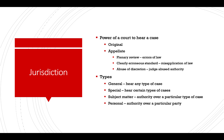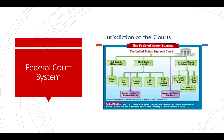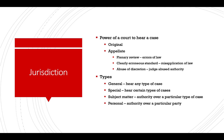Appellate courts can also appeal for misapplication of facts — that's a clearly erroneous standard. And they can appeal because the judge abused his or her authority — that's abuse of discretion. There are four different types of jurisdiction. General jurisdiction means a court can hear any type of case. Special jurisdiction means courts can only hear certain types of cases — for example, the U.S. Tax Court can only hear tax cases, and military courts only hear cases involving military claims. The 94 district courts have general jurisdiction. There's also subject matter jurisdiction — authority over a particular type of case — and personal jurisdiction — authority over a particular party to the case.